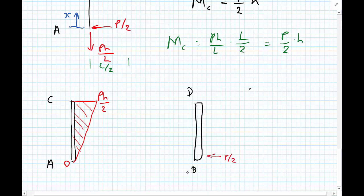So P upon 2 times X, and then at the maximum value would get you P H upon 2. So the bending moment for BD is also a linear function going along BD from 0 at B to P H upon 2 at the maximum at D.